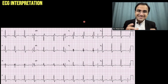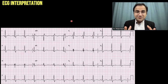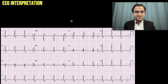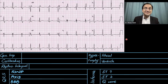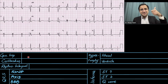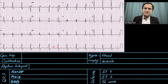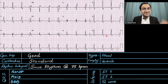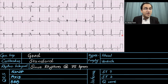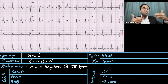Now we will solve some ECGs using the 6-step method. Look at this ECG — pause the video and find out whether right bundle branch block is present or not. In the 6-step method, the first step is to look at the general impression. The ECG is not very fast, not very slow, and not showing any ugly morphologies — so the general impression is good. The second step is calibration: the calibration box is one large box wide and two large boxes tall, which is standard calibration, meaning the ECG is printed at 25 mm per second.